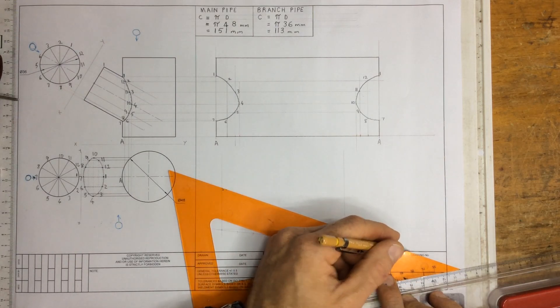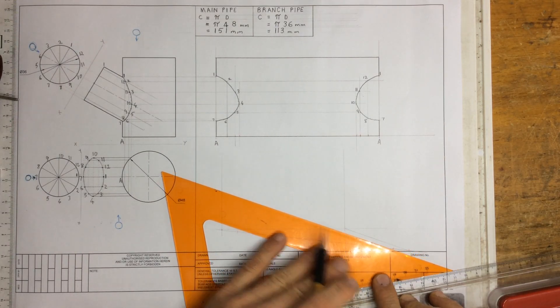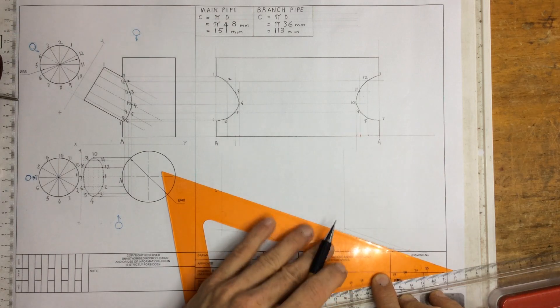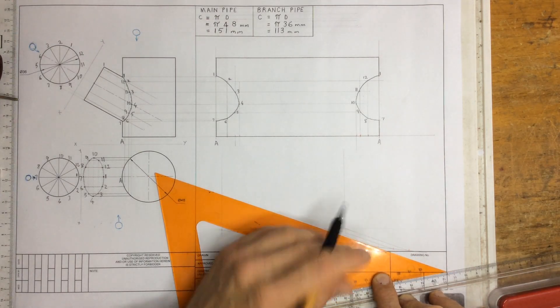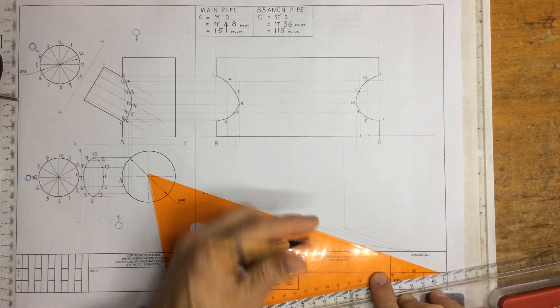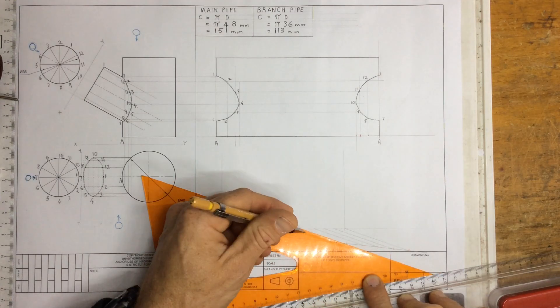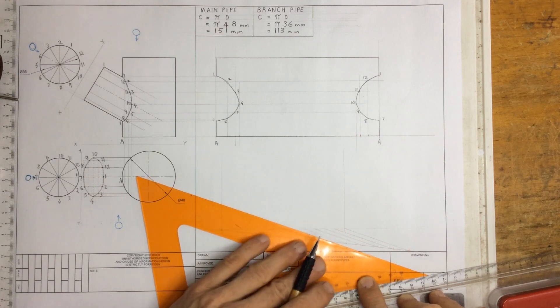Slide it back to the next point, draw a little line there. Slide it back to the next point, draw a little line, and we carry on doing that until we've got our 12 equal segments on the base over there.